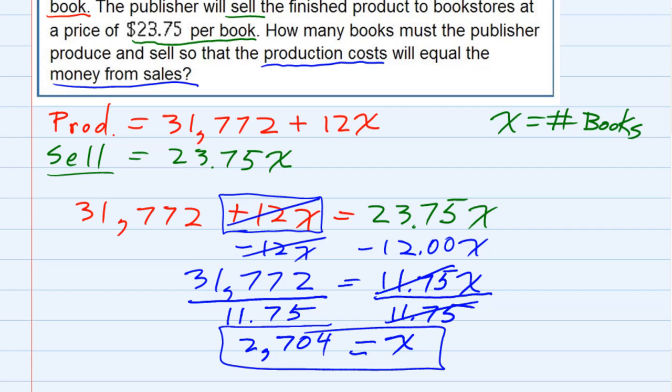X is the number of books, 2,704. That's how many we'll have to sell in order for the production cost to equal our sales cost.